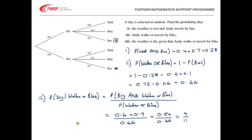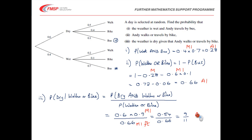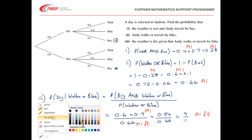Let's look at the mark scheme. For part one, it's a straightforward method mark for multiplying and an accuracy mark for the correct answer. For part two, there's a method mark for working out those two bus probabilities and subtracting from one, and an accuracy mark for the correct answer. For part three, there's a method mark for finding P(dry and walks or bike), a method mark with follow-through for using the part two answer in the denominator, and an accuracy mark with follow-through for getting 9/11. For follow-through to count, your probabilities must all be valid — between zero and one.